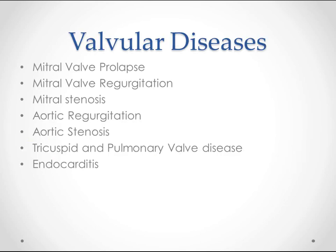Valve diseases — anything that goes wrong with a valve could be considered a valve disease. But most often when we talk about valvular disease we're talking about prolapse and regurgitation. This can happen in any of the four valves of the heart. We're going to talk specifically about mitral valve prolapse and regurg, mitral stenosis, aortic regurg, aortic stenosis, and just touch on tricuspid and pulmonary valve disease. Just remember that with almost any of these diseases, endocarditis can be a precipitating factor.